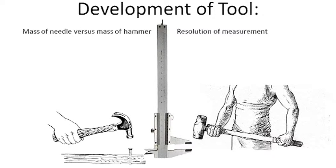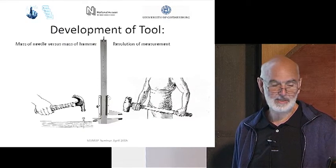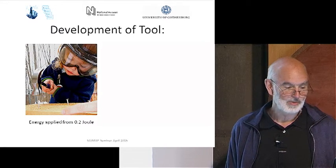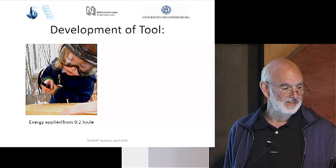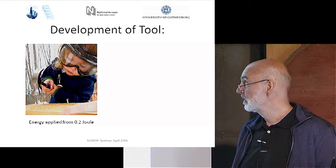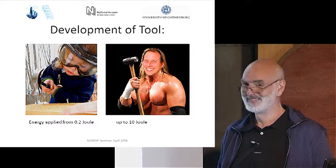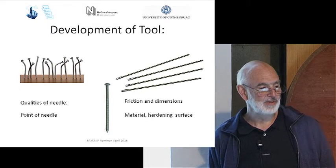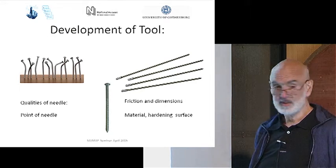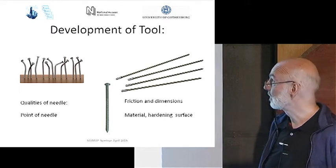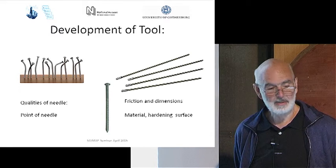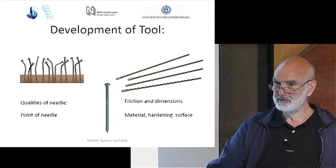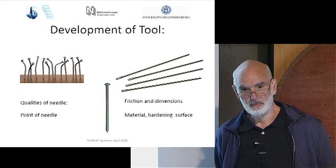For us it was important to find out what meaning it has for the data we obtain if we use a big hammer or a smaller hammer — what is the relation between the mass of the spike and the mass of the hammer. Also important is what kind of resolution we are aiming for, how much energy we have to apply, and we are working with energies from about 0.2 joules up to 10 joules. There is also the issue of needle qualities — there's a question about friction, whether we should aim for a blunt or sharp point, what dimensions.